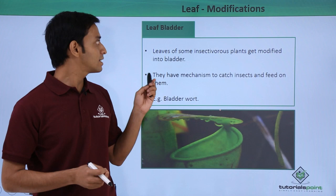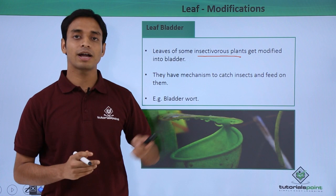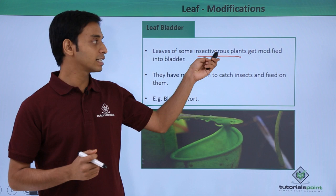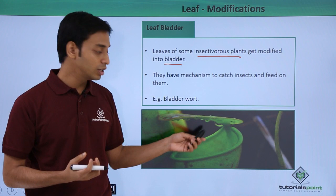The next type of modification is known as the leaf bladder. These types of modifications are mostly found in insectivorous plants — plants which feed themselves on insects. The leaves of some insectivorous plants get modified into a bladder-like structure, as you can see here. It is mostly like a container or bladder-like structure and they have a lid, as you can see.